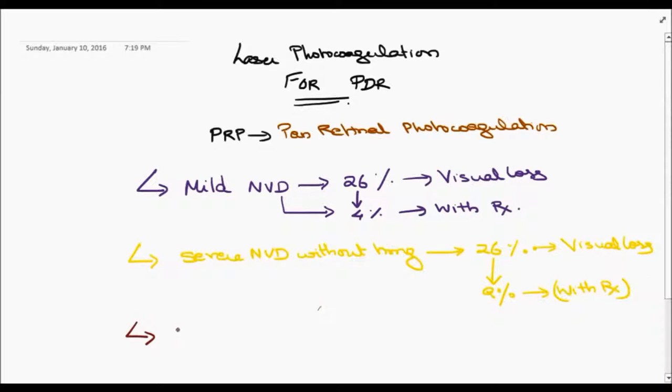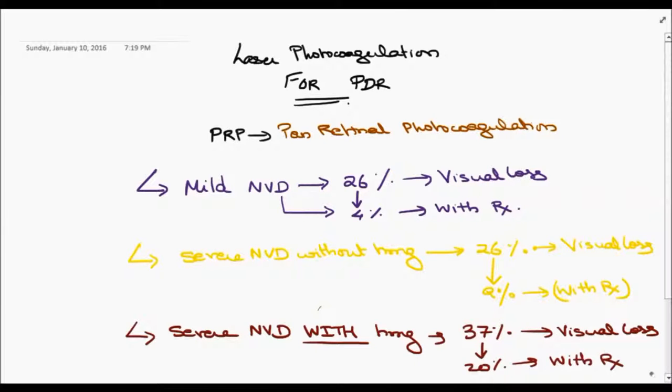Those patients who have neovascularization with hemorrhage have 37% chance of visual loss, whereas this improves to 20% with treatment.